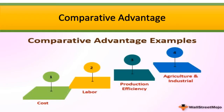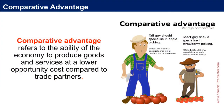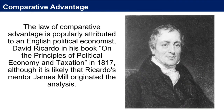Comparative advantage refers to the ability of the economy to produce goods and services at a lower opportunity cost compared to trade partners. A comparative advantage gives a company the ability to sell goods and services at a lower price than its competitors and realize stronger sales margins. The law of comparative advantage is popularly attributed to an English political economist, David Ricardo, in his book On the Principles of Political Economy and Taxation in 1817, although it is likely that Ricardo's mentor James Mill originated the analysis.